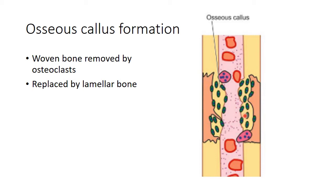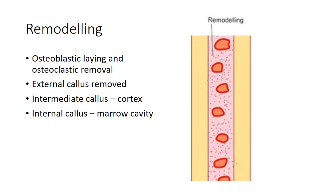So the woven bone callus is removed and replaced by lamellar bone. The third and final stage is the stage of remodeling, in which osteoblastic laying down and osteoclastic removal takes place simultaneously. The external callus is removed, the intermediate callus gives rise to the cortex of the bone, and the internal callus forms the marrow cavity.